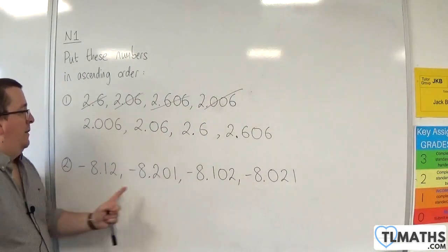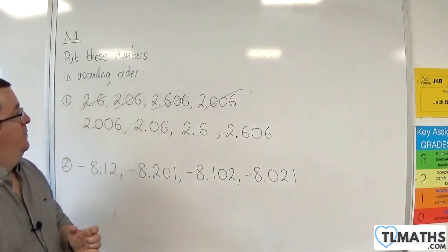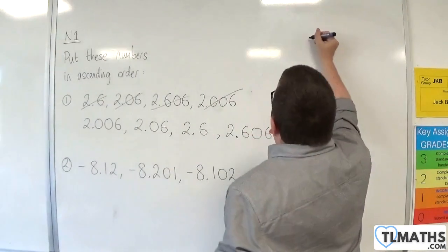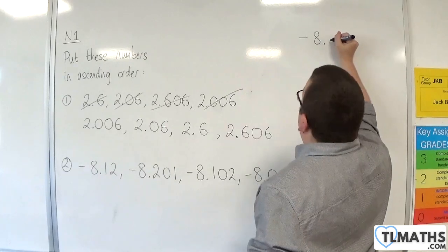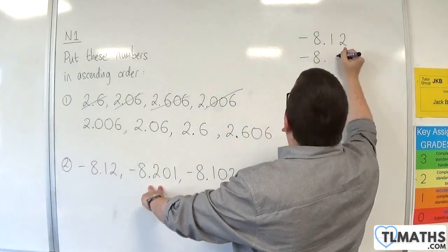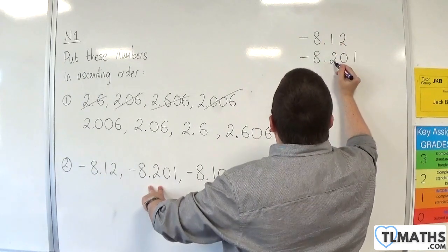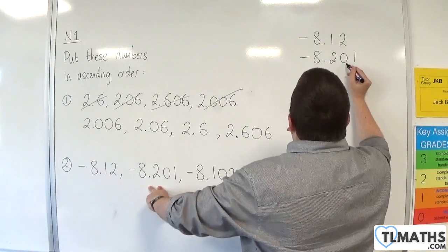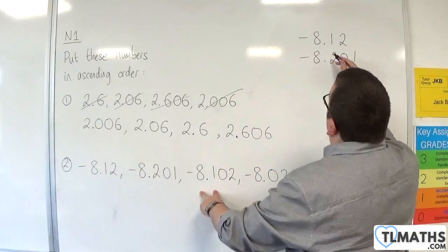So I'm going to write minus 8.12, then minus 8.201, making sure my tenths and hundredths column line up. And the decimal points,